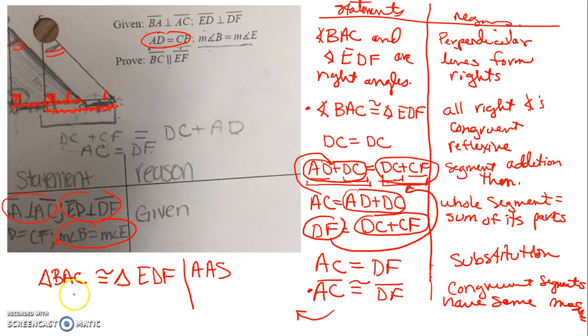Now that I have those two triangles being congruent to one another, I know that this angle right here is congruent to this angle right here. We're almost done, I swear. Now we know that angle C is congruent to angle F, and that's why corresponding parts of congruent triangles are congruent.